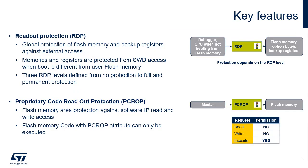The following means are provided for code protection purposes: RDP, the readout protection; PC-ROP, the proprietary code readout protection; WRP, the write protection. Secure user memory protection ensures the safe execution of sensitive applications in addition to code and data protection.